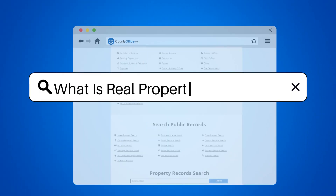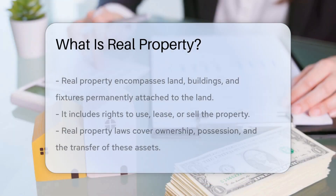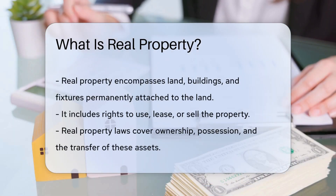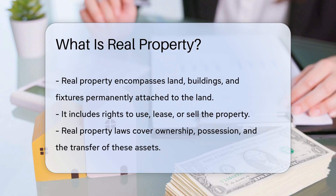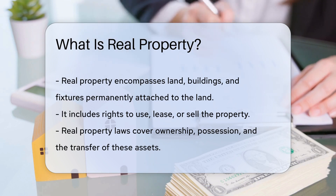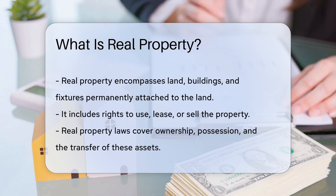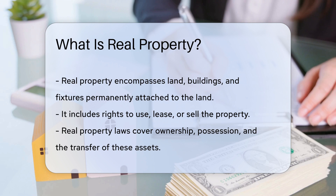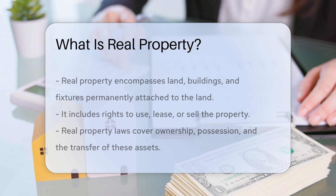What is real property? Real property refers to land, buildings, and fixtures permanently attached to the land. It includes the rights to use, lease, or sell the property. Real property laws govern ownership, possession, and transfer of these assets.